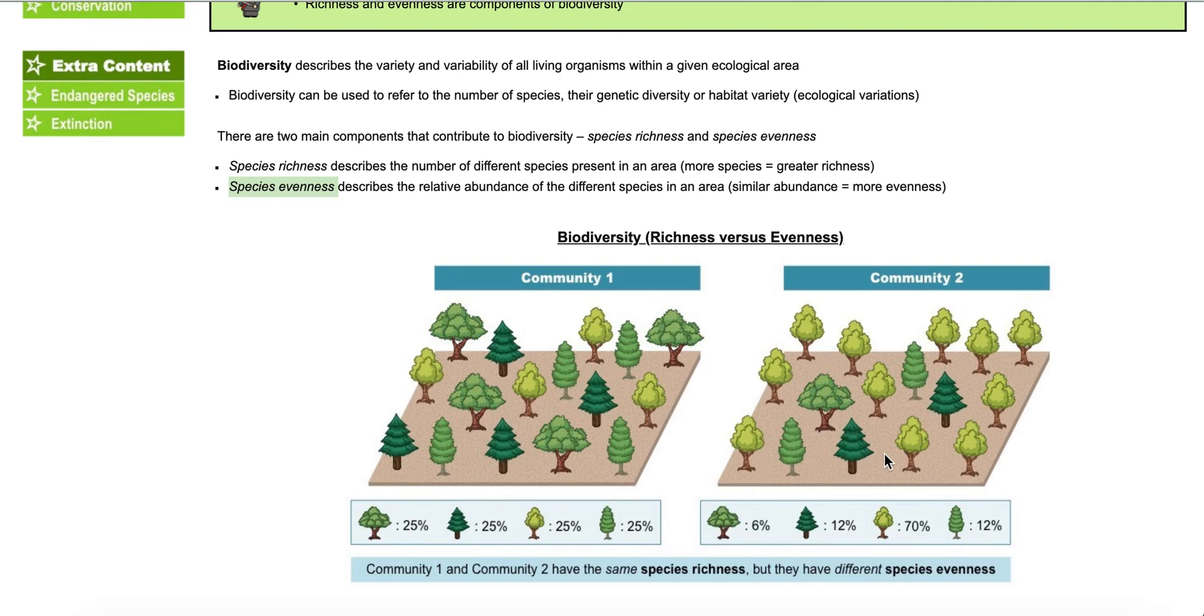In community two, we can see that that's not the case. They are not as even. So I can see with this tree here, there's only one. Where this tree here, there is 1, 2, 3, 4, 5, 6, 7, 8, 9, 10, 11. So it is not as even.